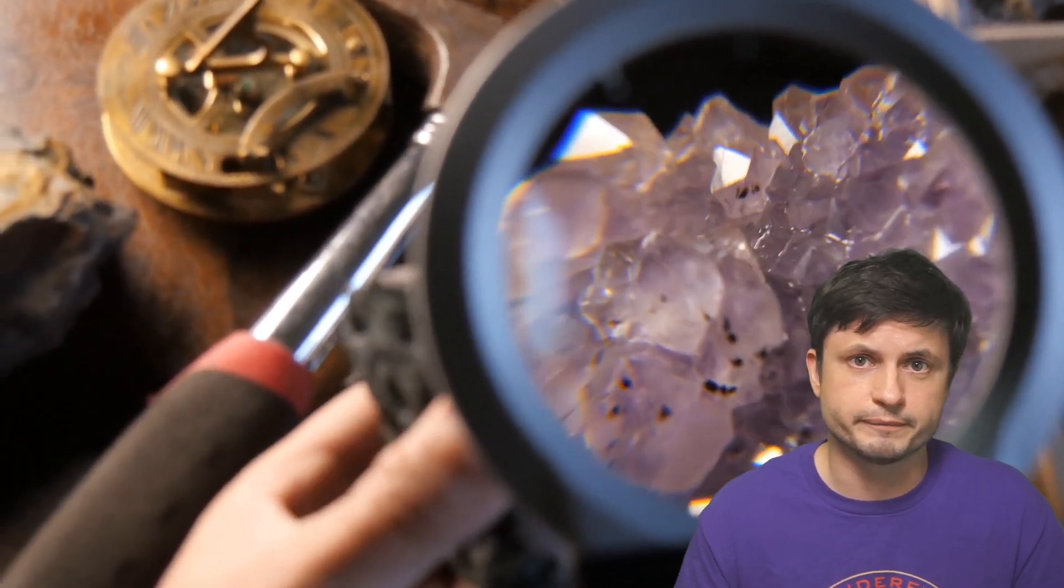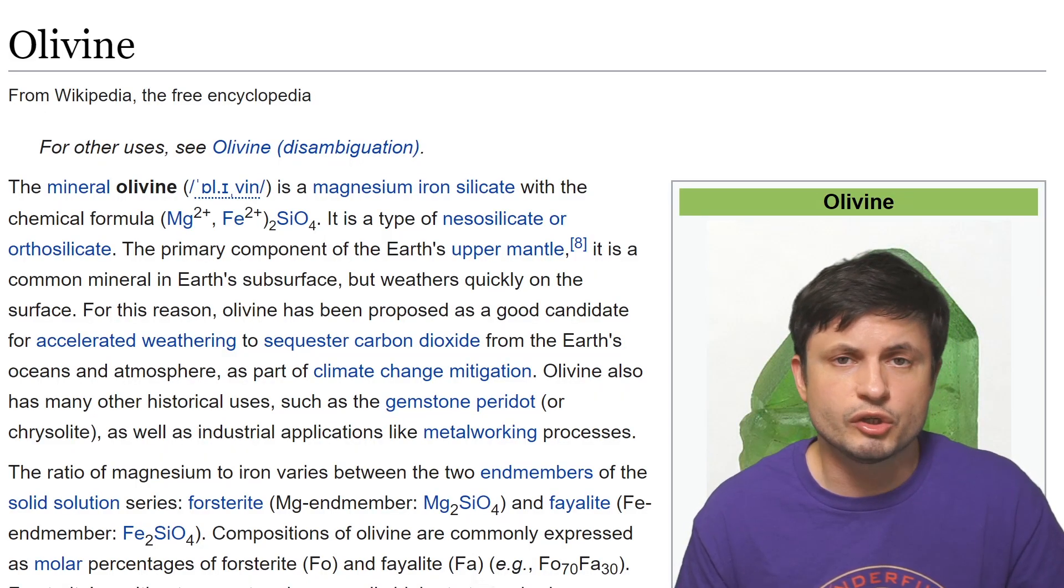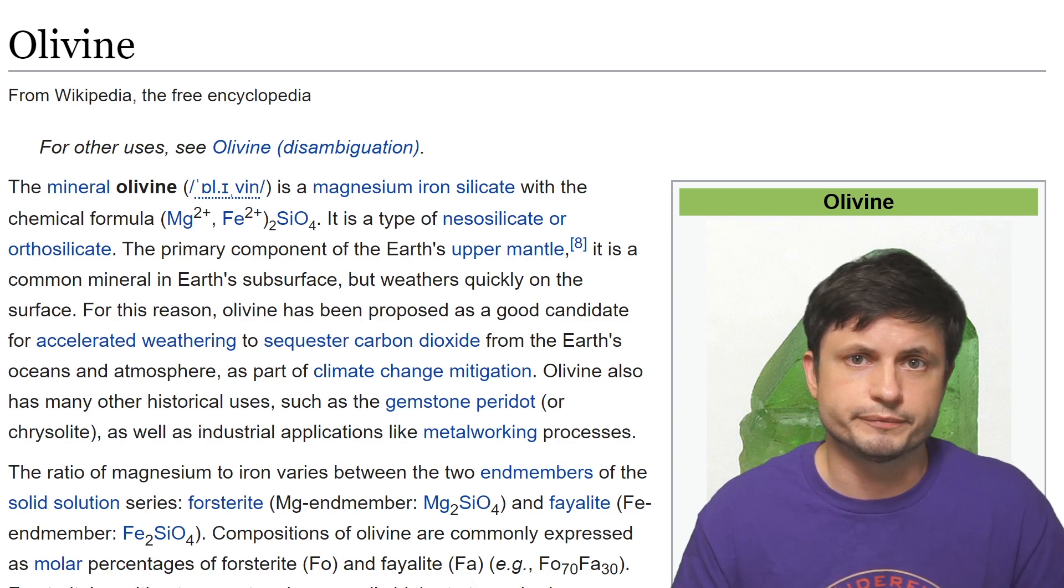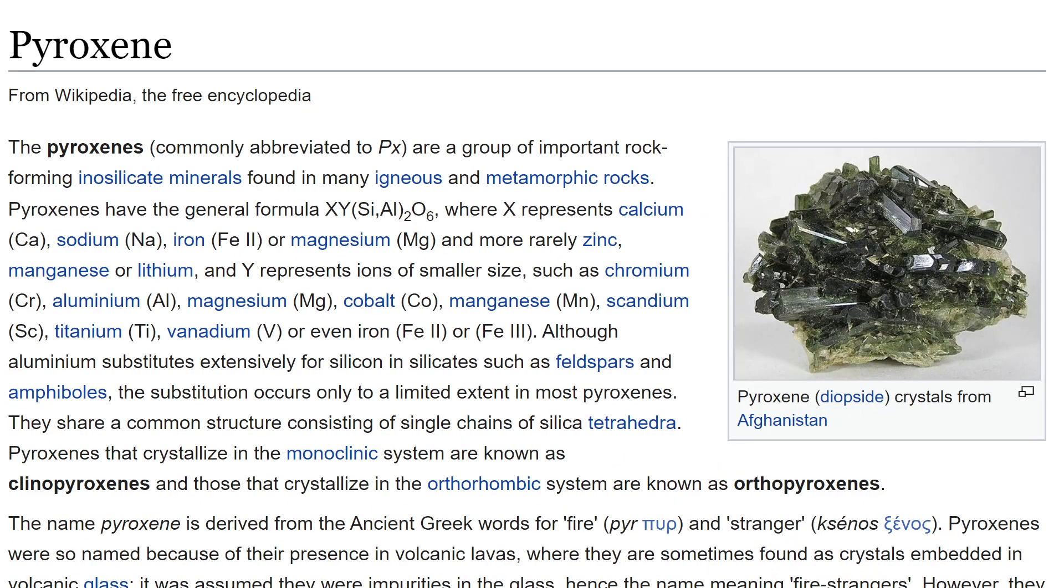For Earth, a lot of these elements form two major minerals: the mineral known as olivine that contains magnesium, iron, silicon, and oxygen, and the mineral known as pyroxene that contains silicon, aluminum, oxygen, and sometimes sodium, iron, and magnesium and a few other elements.